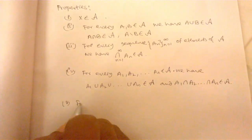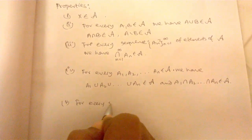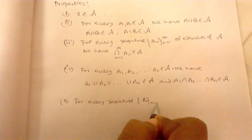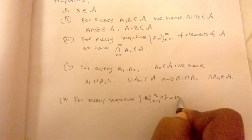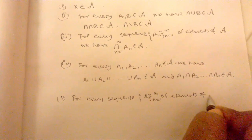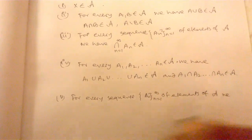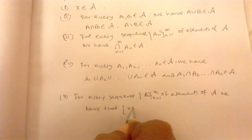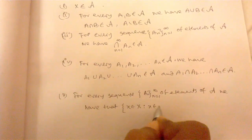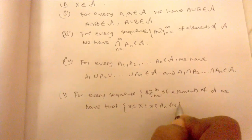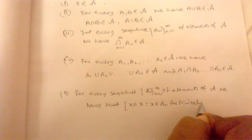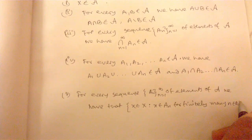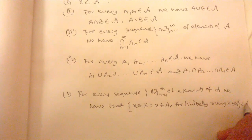Property 5: for every sequence A_n, n equals 1 to infinity of elements of collection A, we have that {x belongs to X such that x belongs to A_n for finitely many n belongs to the set of natural numbers} belongs to the collection set A.